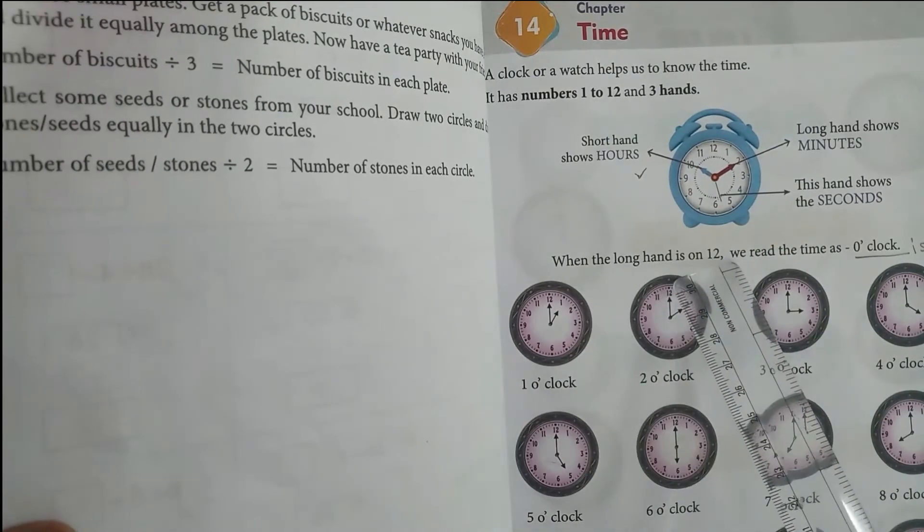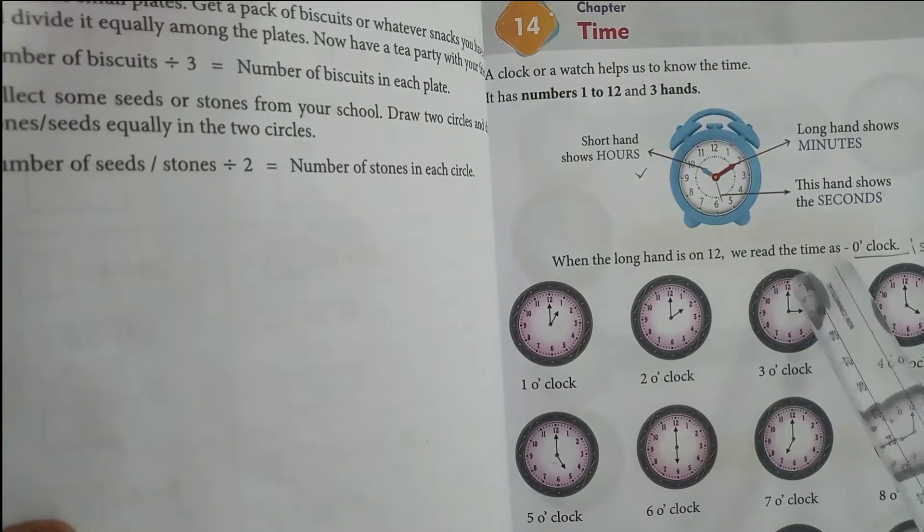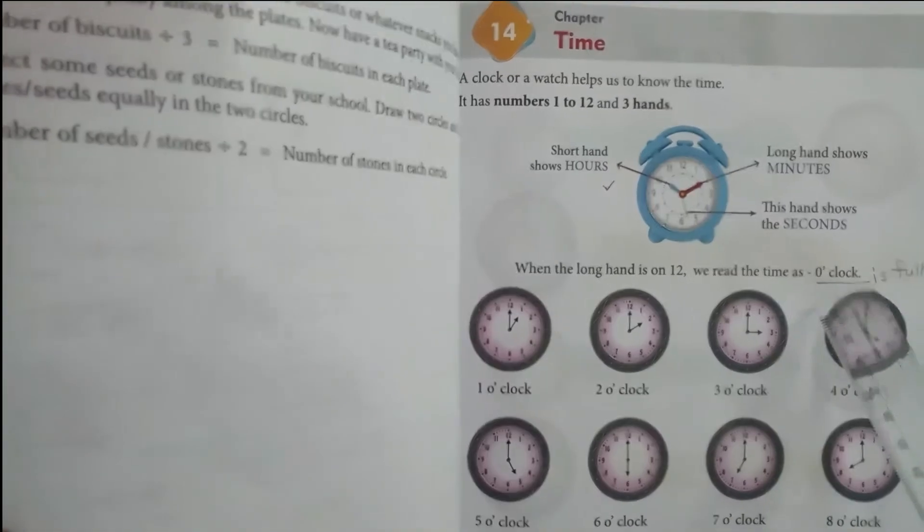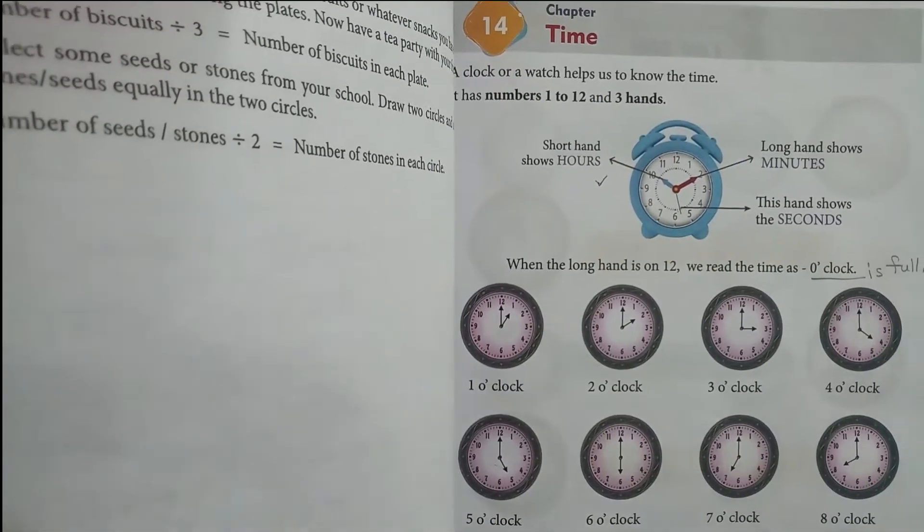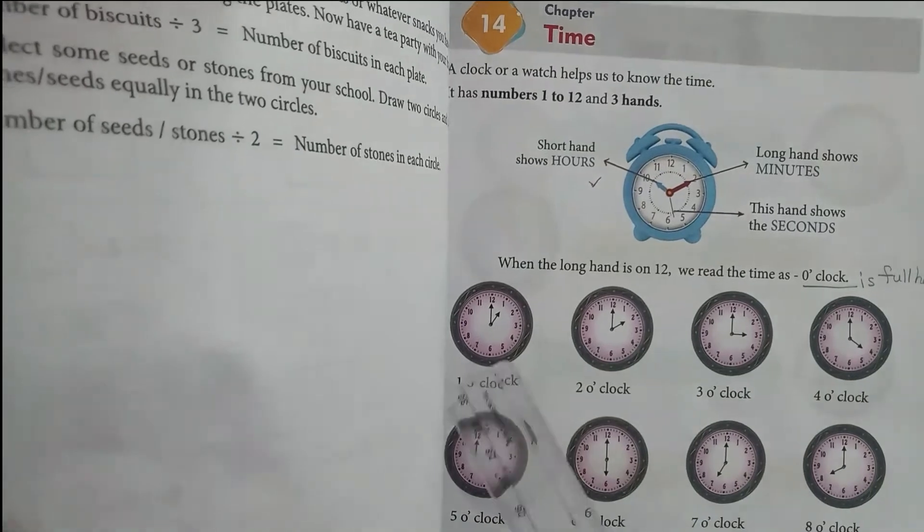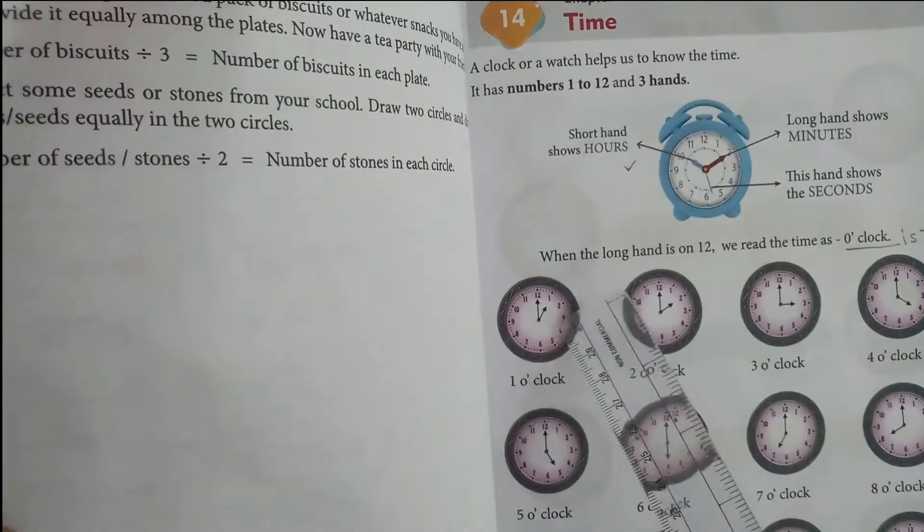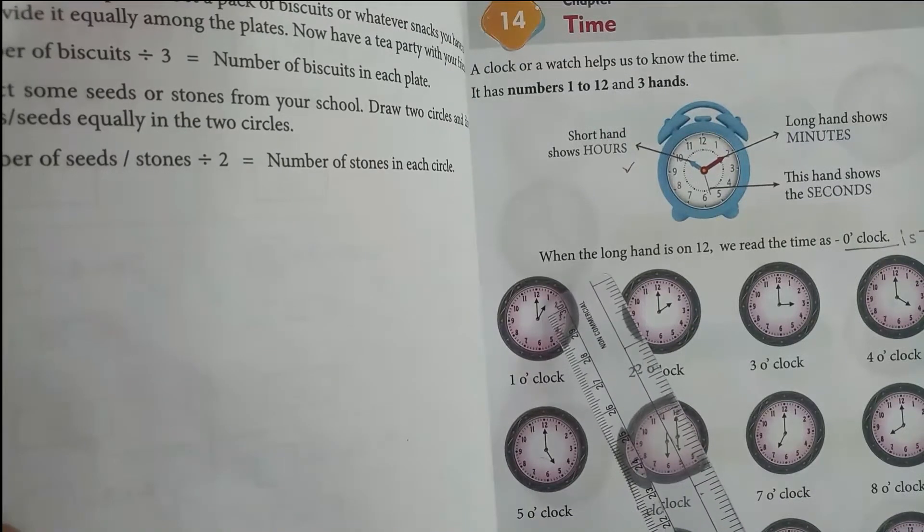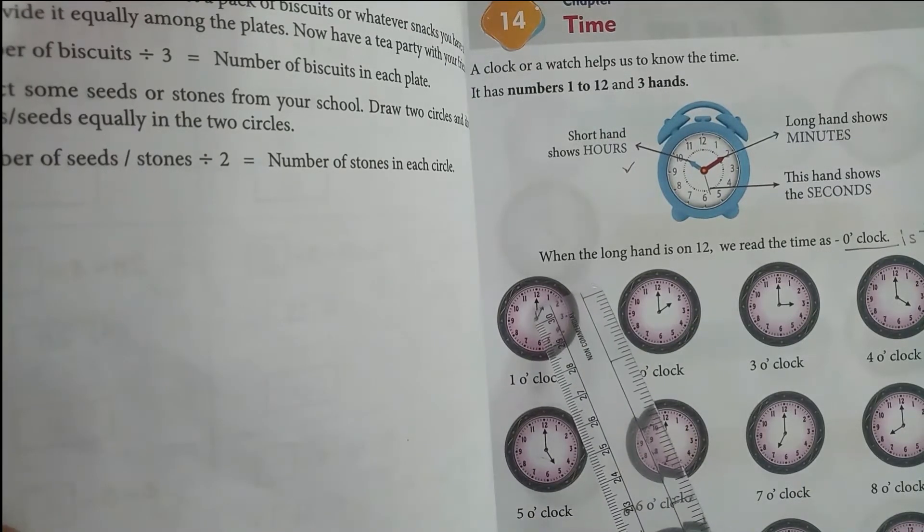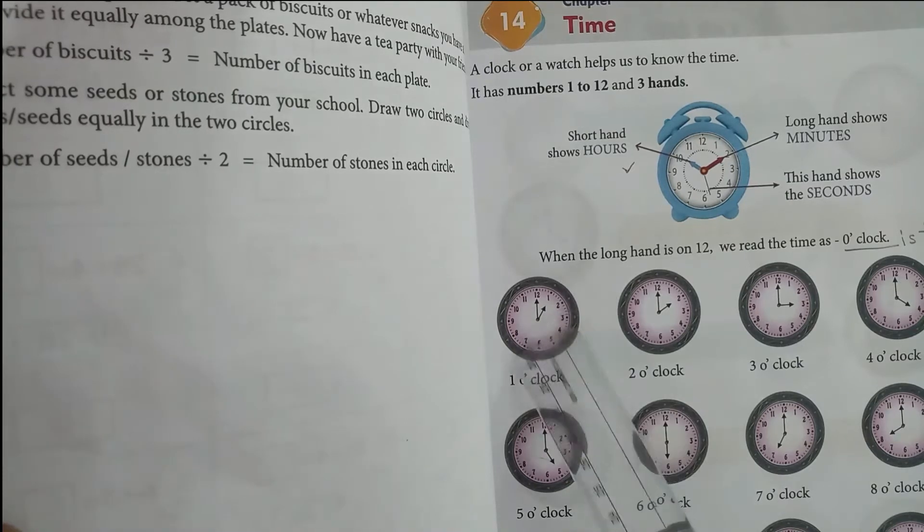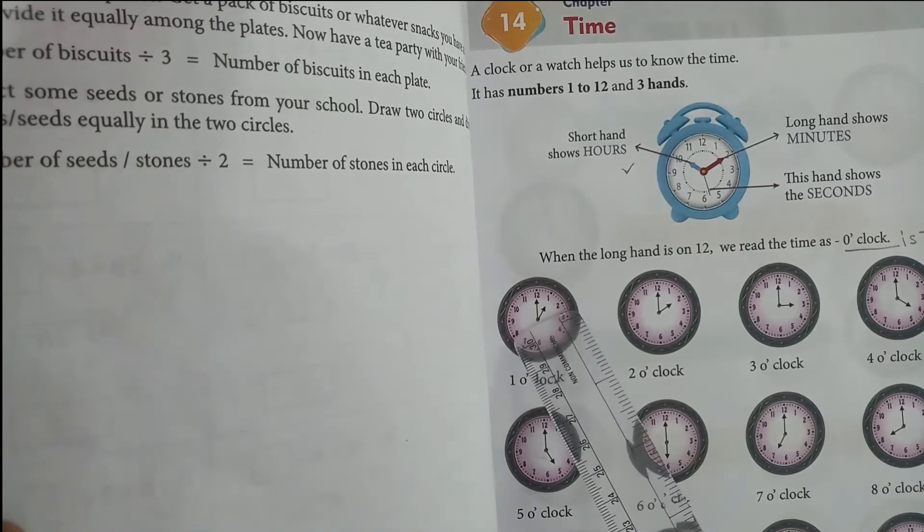When the long hand is on 12, we read the time as o'clock. O'clock means full hour. Now see the time here: 1 o'clock. That means the short hand is pointing at 1 and the long hand is pointing at 12.